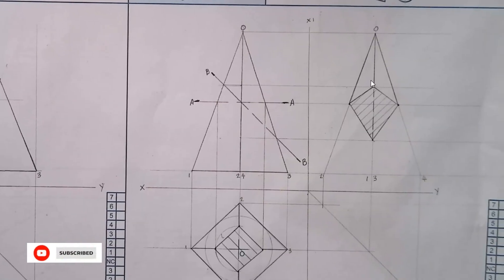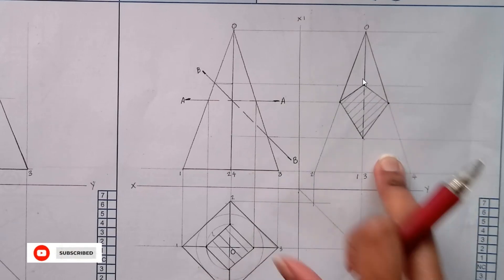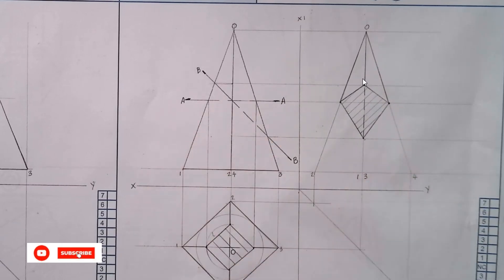As you can see, sectional top, sectional left using AA and BB. Thank you so much for watching. I hope this video helped. I will see you on the next one.